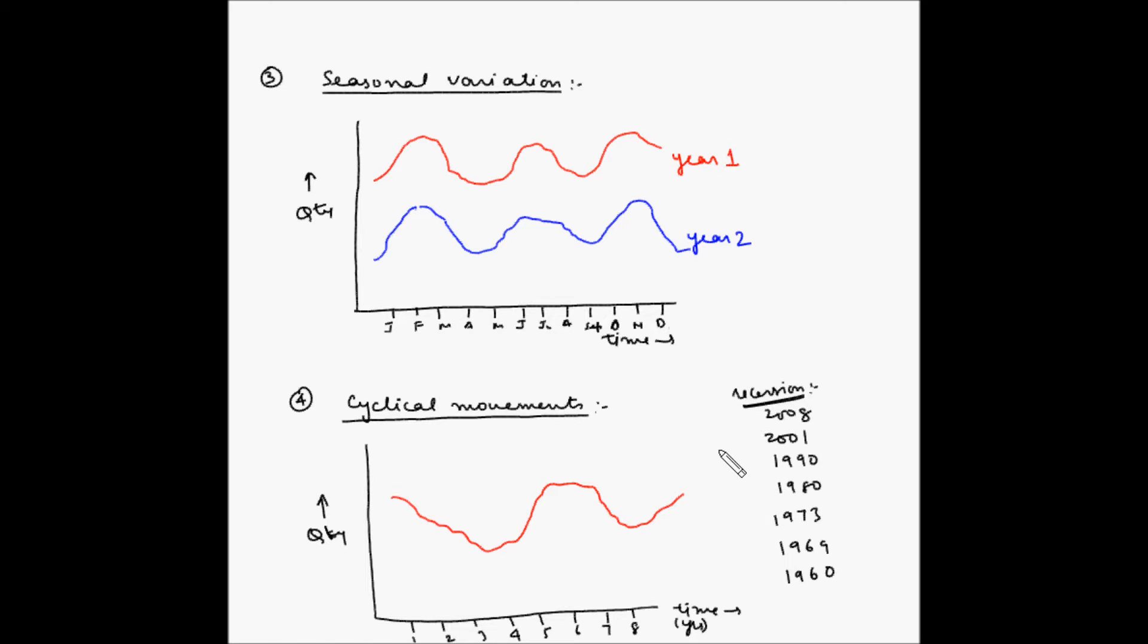So that is the difference between cyclical movement and seasonal variation. Seasonal variation is something which can happen every week, every month, every quarter. But cyclical movements are movements that happen at a duration longer than a year.